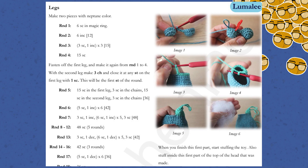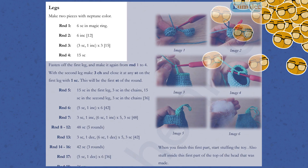Now let's check the pattern for our beautiful Lumali. Here we start with the legs — make two pieces with Neptune color, which is written in the material list on the previous page. RND 1, round number one, you do six single crochets in a magic ring. Round number two, you make six increases, so you have 12 single crochets in total — that number in parenthesis is the total stitches in the round. Round three, you make three single crochets and one increase, repeat the sequence in parenthesis three times, which totals 15 stitches. Round four, you make 15 single crochets. And that is how you read a crochet pattern.